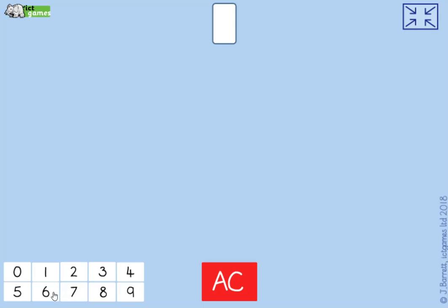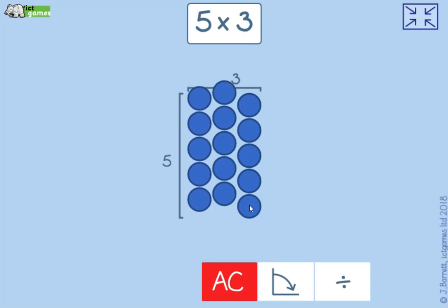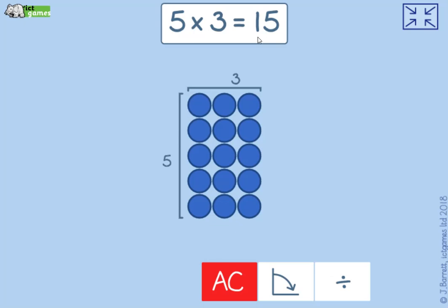This is an array display and the idea is you can show that multiplication can be done in any order. So I'm going to work on 5×3. I've started with five counters and how many times I'm going to have five counters, three times: one, two, three. What's my total? 15.